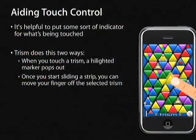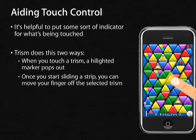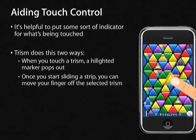In Trism, I did two things to aid with touching. First, when you touch a trism, a semi-translucent trism pops out so you always know what's beneath your finger regardless of finger size. Second, once you've established a strip and know you want to slide in a direction, you can really move your finger anywhere on the screen. It's a very forgiving gameplay design — the strip will always slide along the XY corresponding to wherever your finger is.